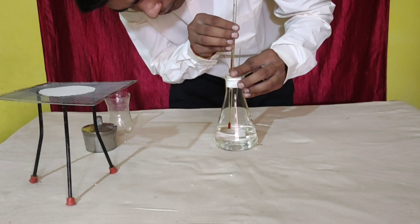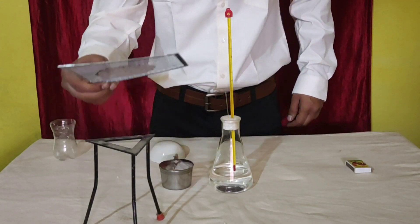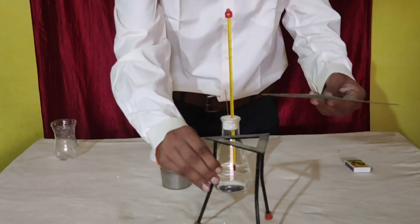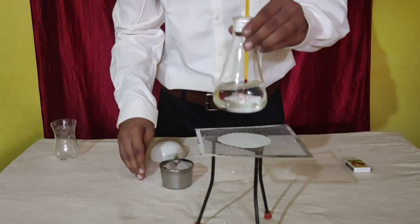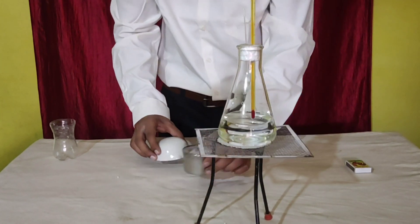The wire gauge is placed on a tripod stand, and the flask is kept over it. Now, water is heated with Spirit Lamp.